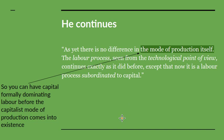The important point is that the mode of production itself doesn't change. So you can have capital formally subordinating labour before the capitalist mode of production comes into existence. This is a very important point for people examining social relations in a country like India — you should not assume that where there is wage labour you actually have the capitalist mode of production. You may have only a formal subordination of labour to capital.